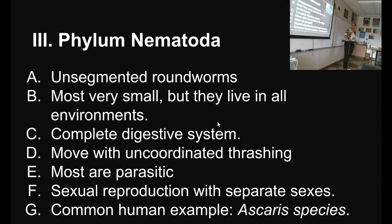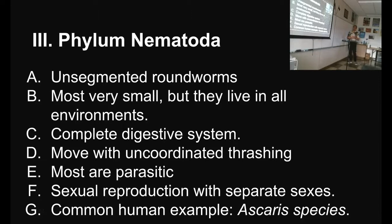Now we are in a different phylum. Phylum Nematoda — these are unsegmented roundworms, so we're not in flatworms anymore. Most of them are very, very small — only a centimeter or two long. They live in all environments of the world and have been found in strange places where it's very hard to live — nematodes are really robust. They have a complete digestive system with a mouth and an anus that are not the same thing. They're the first creature we've talked about with a mouth and a rear end that are different.